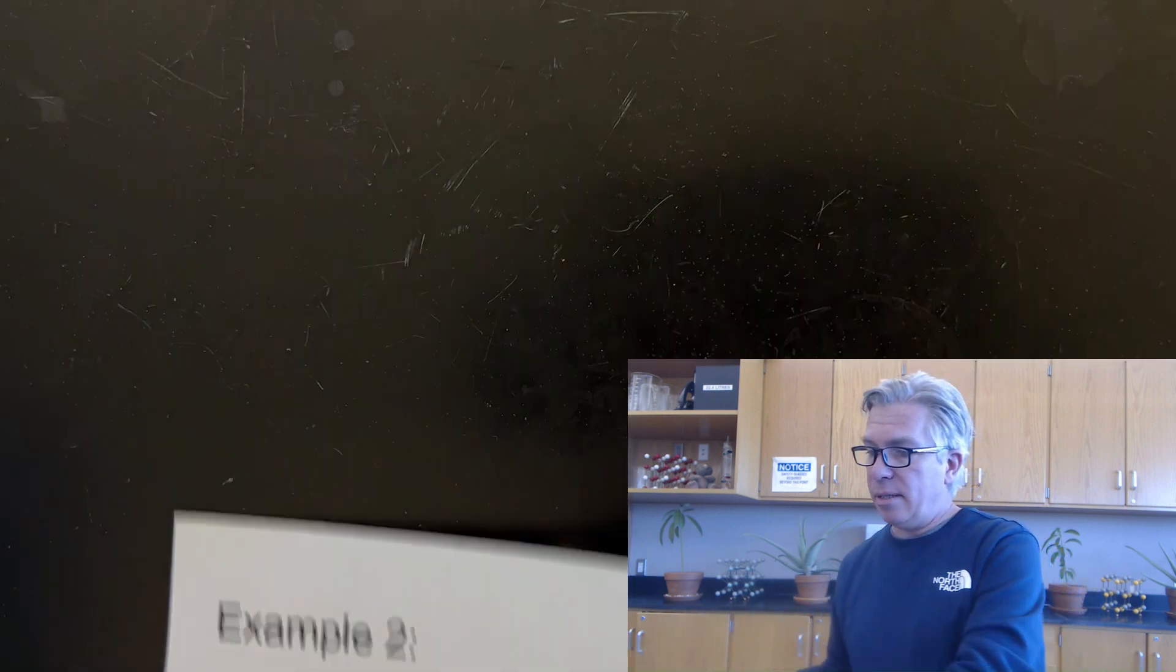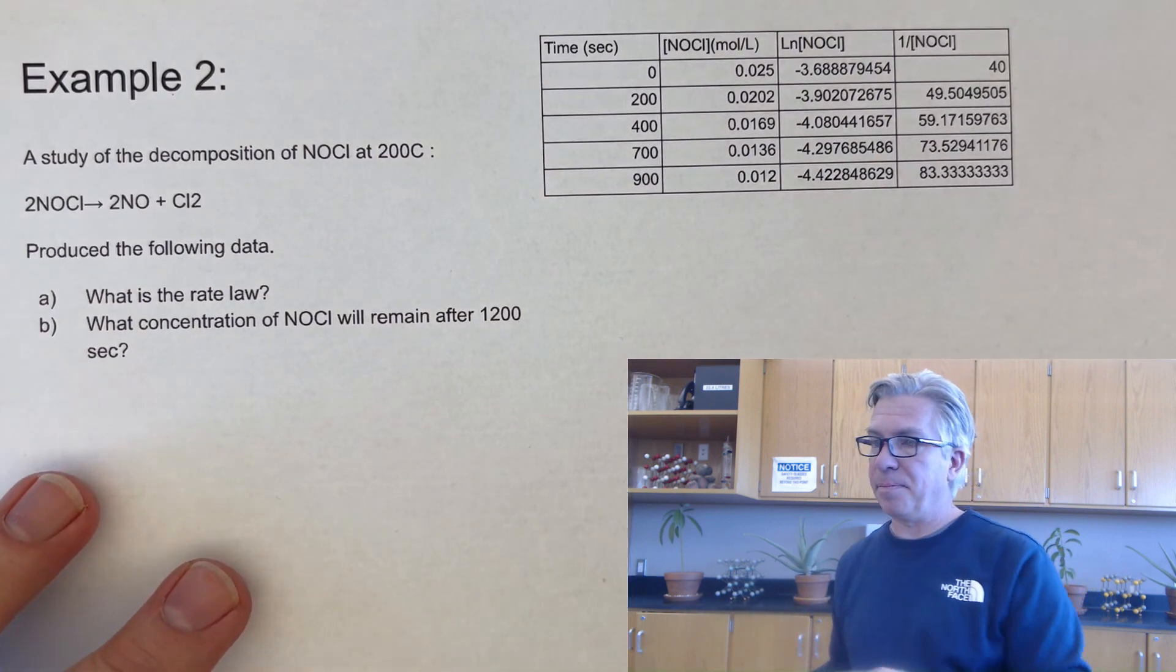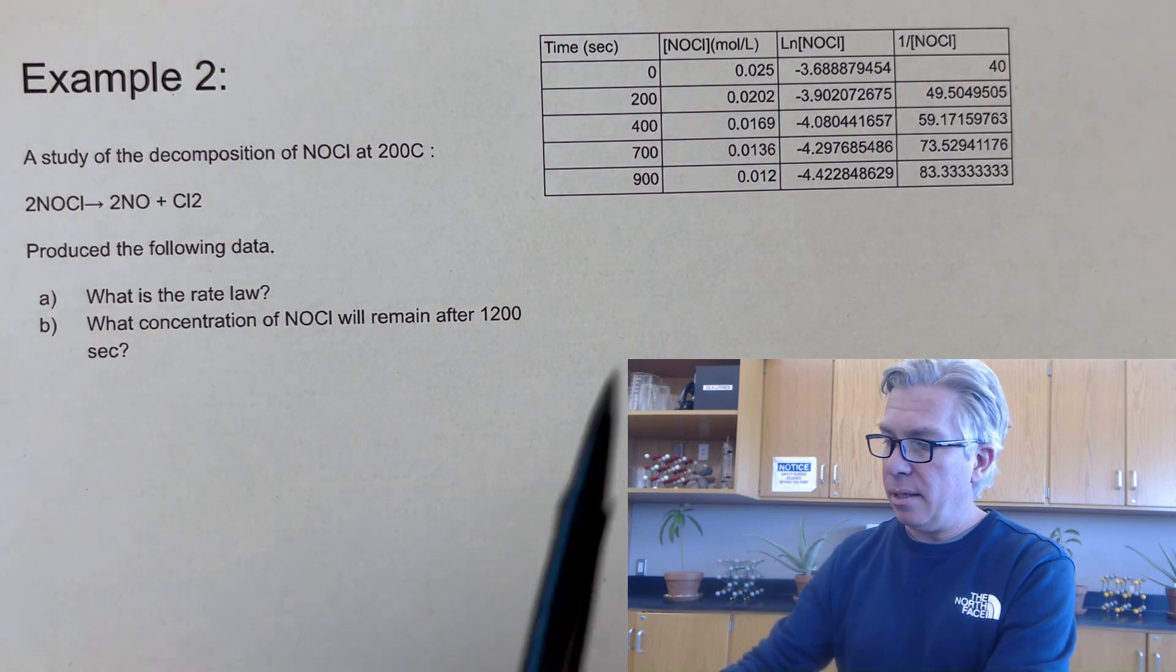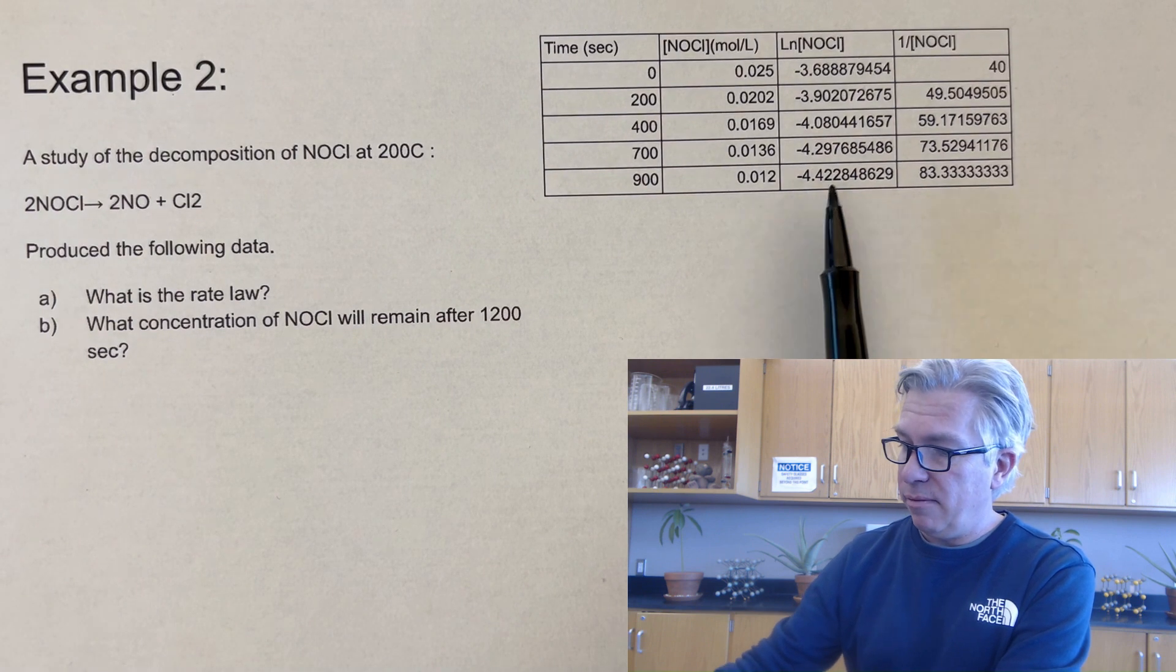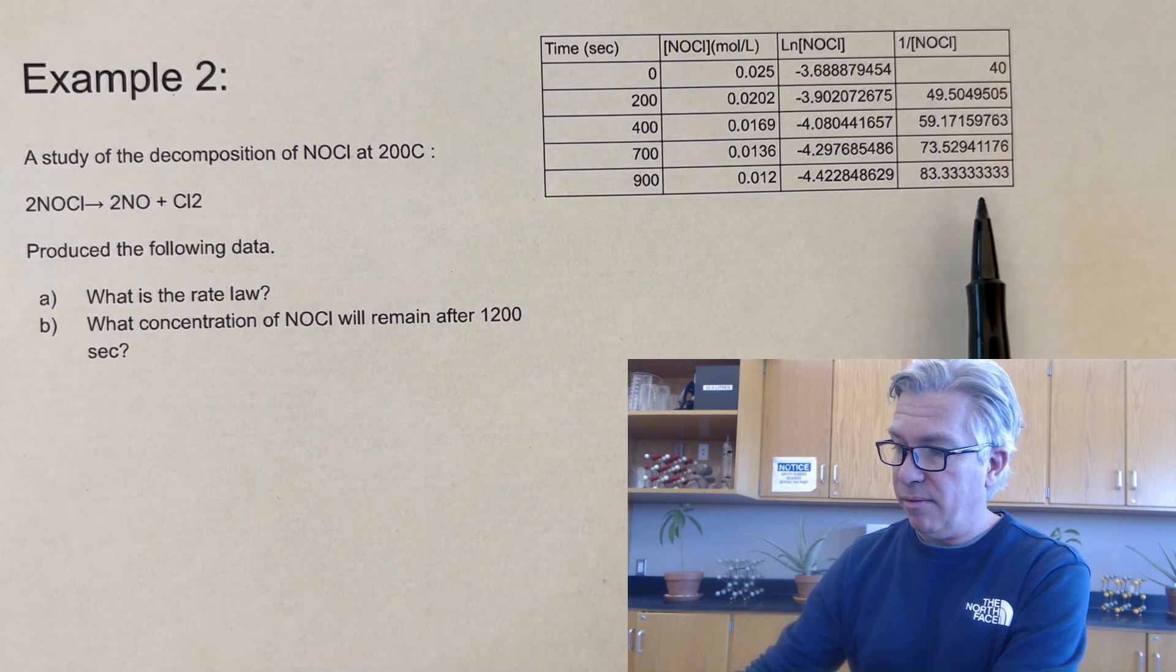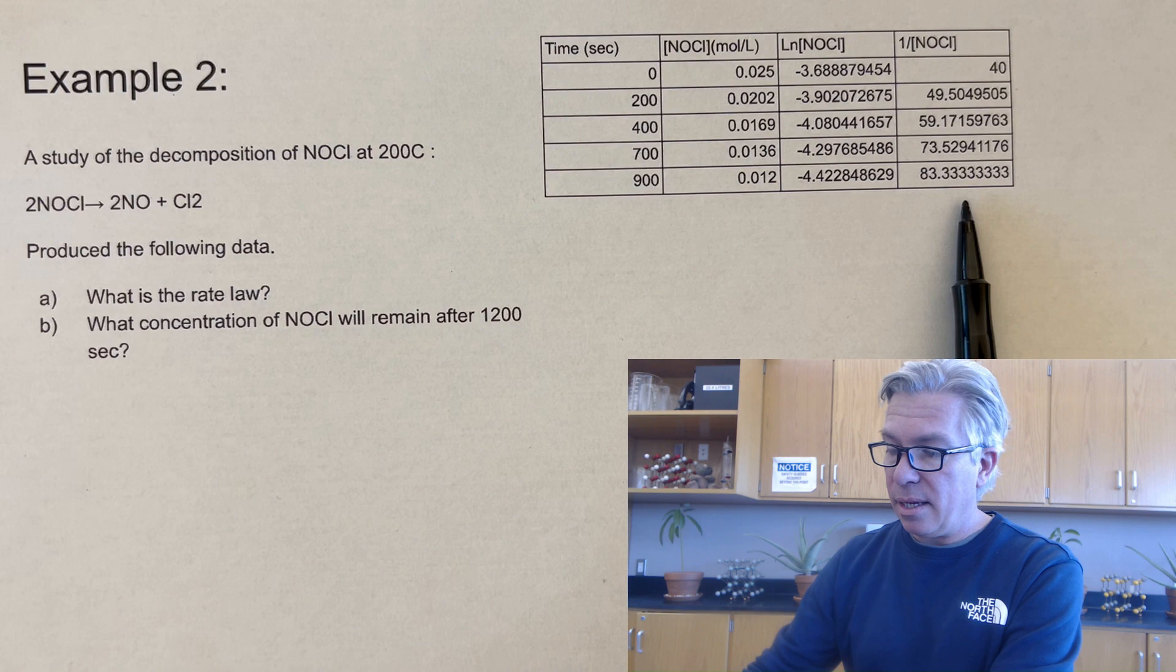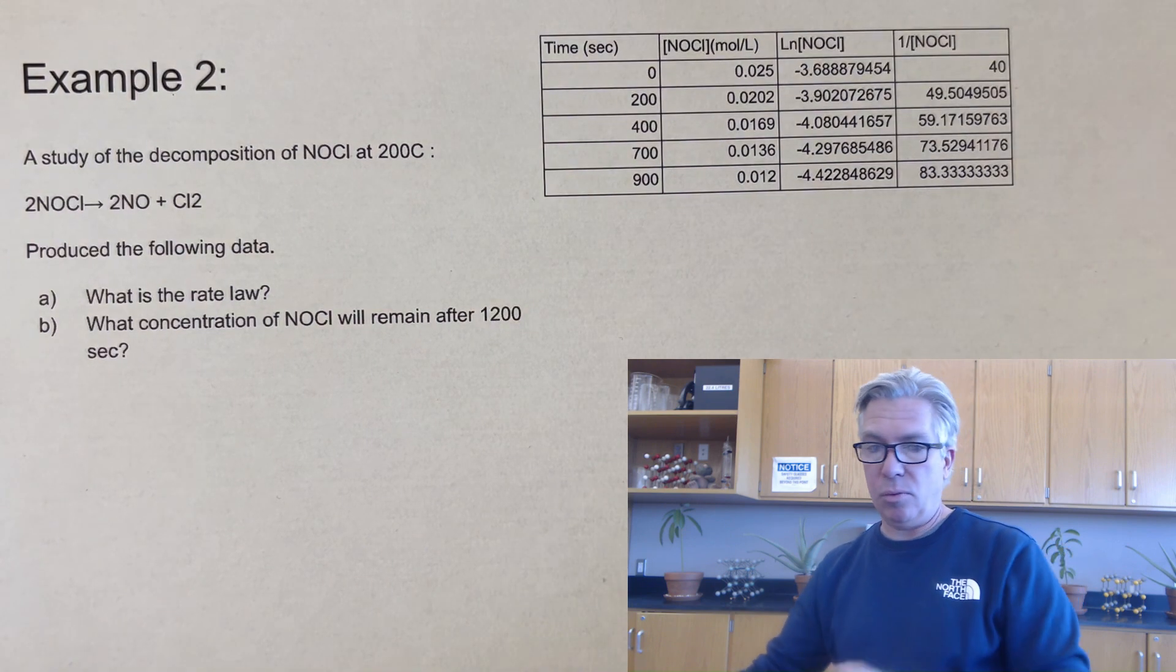Okay. And what I did is I went a step further than what they gave me and put in my time, the concentrations. I made a natural log column of values and an inverse column of values. And then I wanted to go ahead and plot them. So we'll come back to this page in just a second. But let's look at the plots.